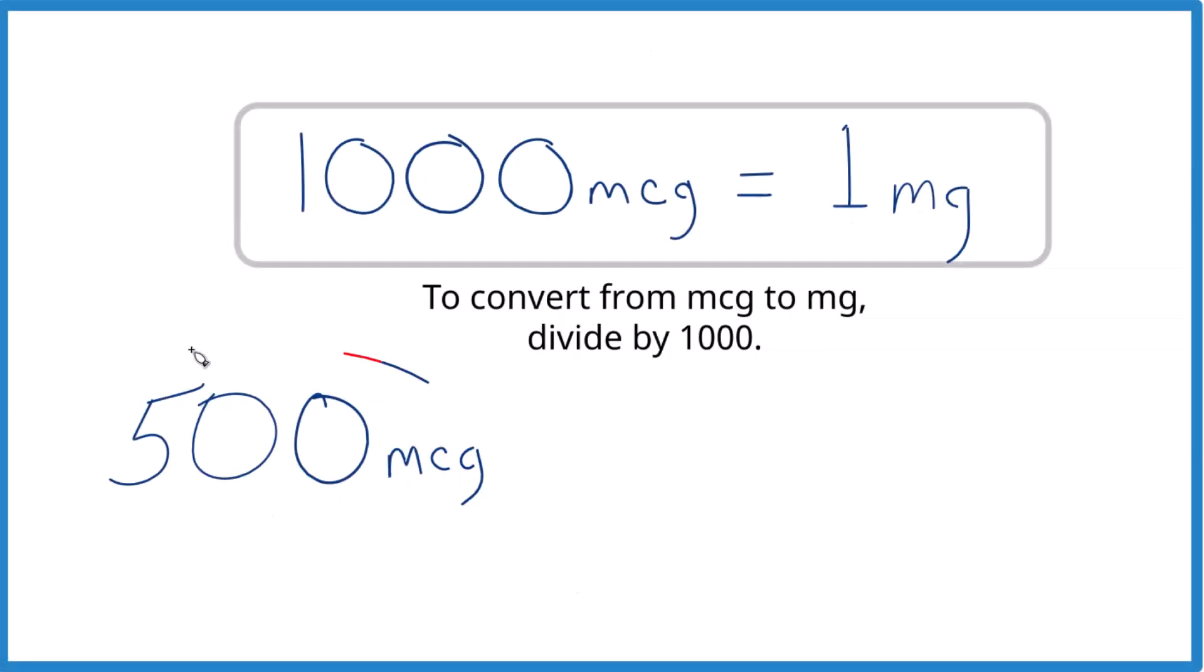So if you're given 500 MCG, that's 500 micrograms, and you want to get that to milligrams, here's how you do it.